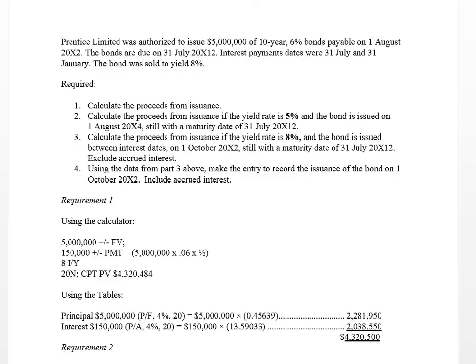Hi folks, welcome to this video on bonds. In this particular question, we can see that we have a $5 million face value bond, 10 years, so it matures in 10 years. The coupon is 6%, and we know that the bonds are issued on August 1st, X2.